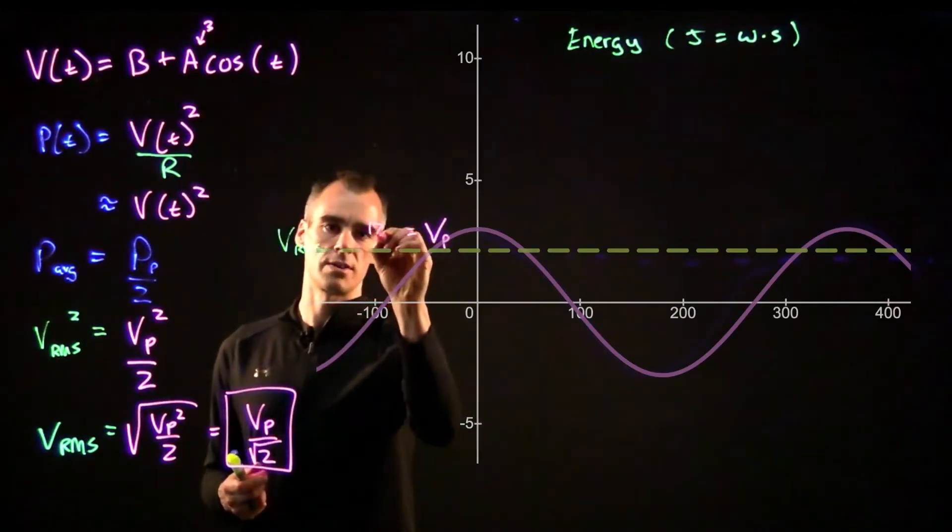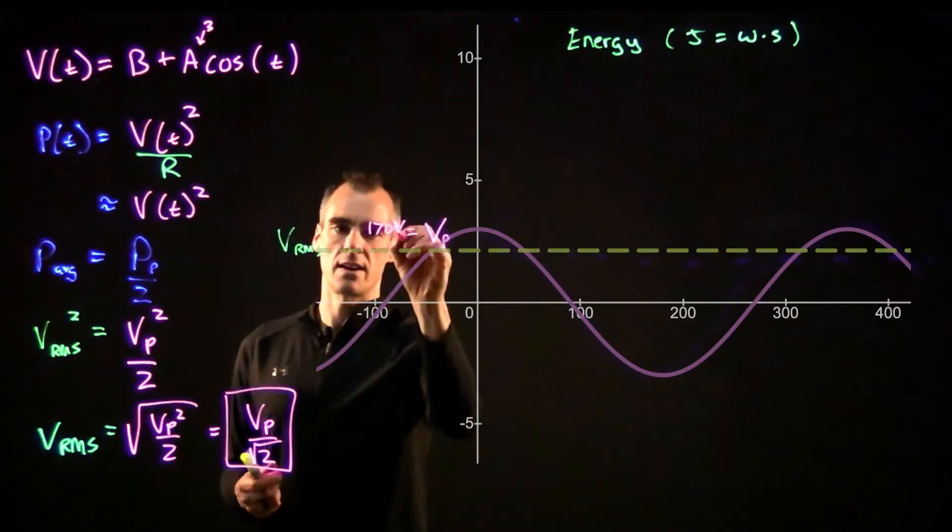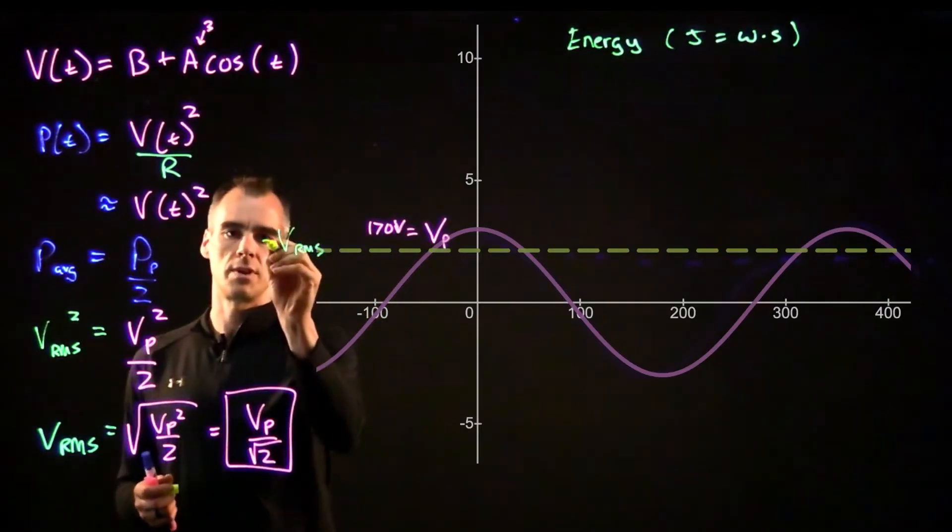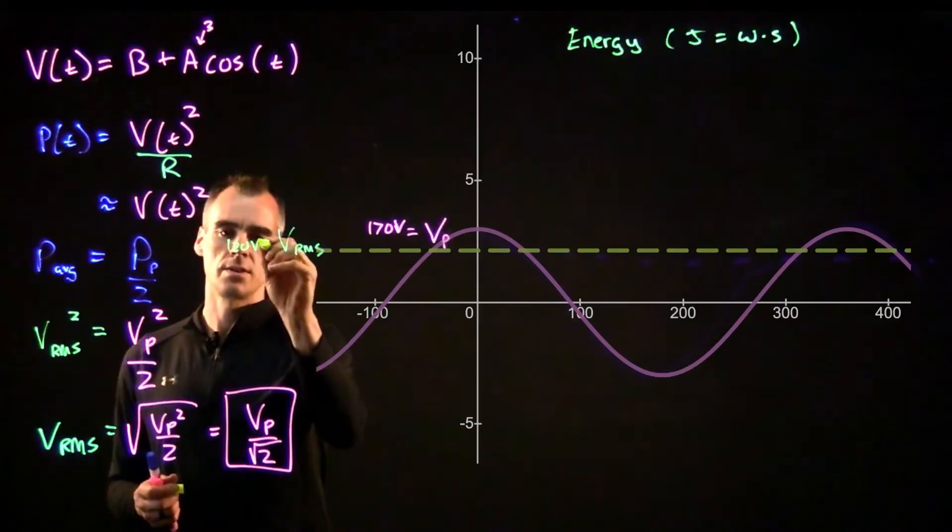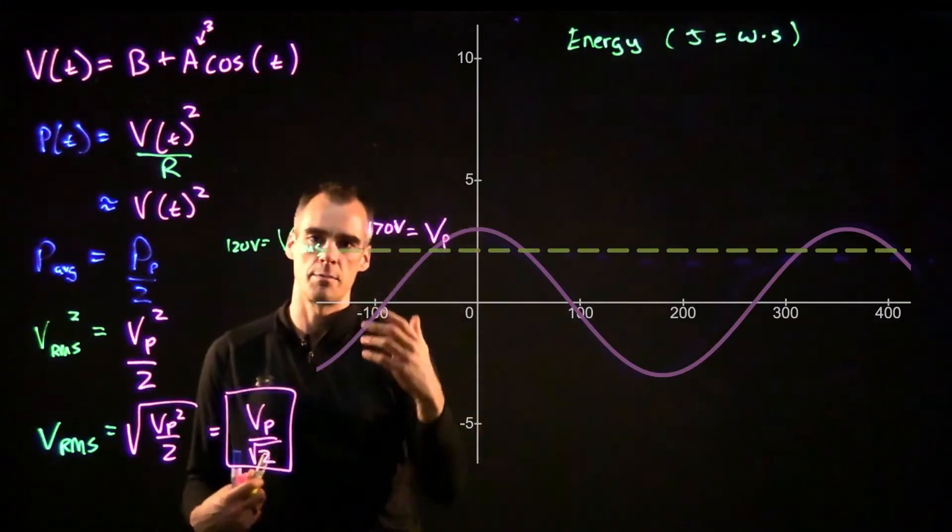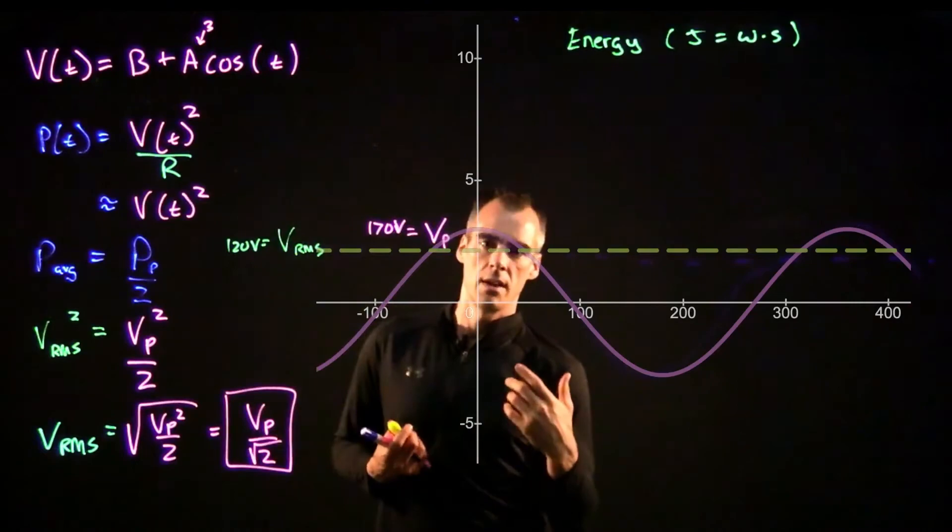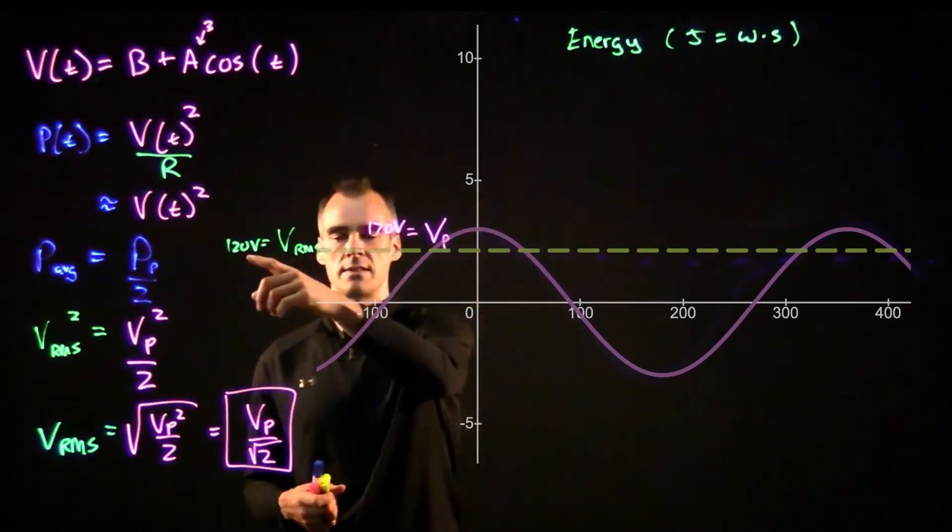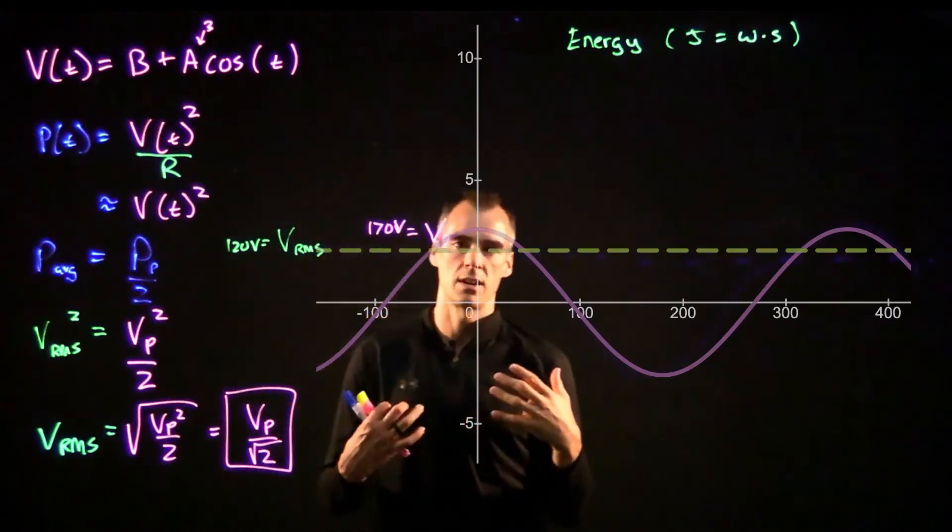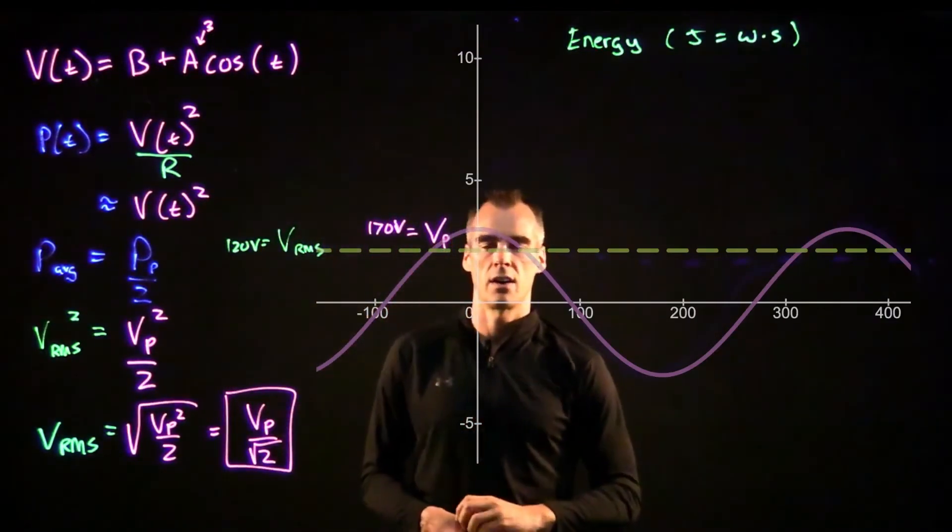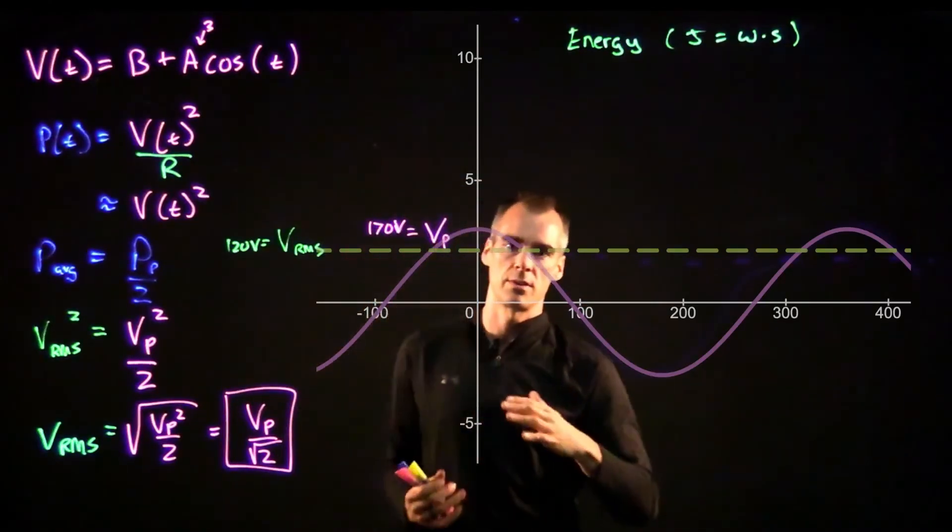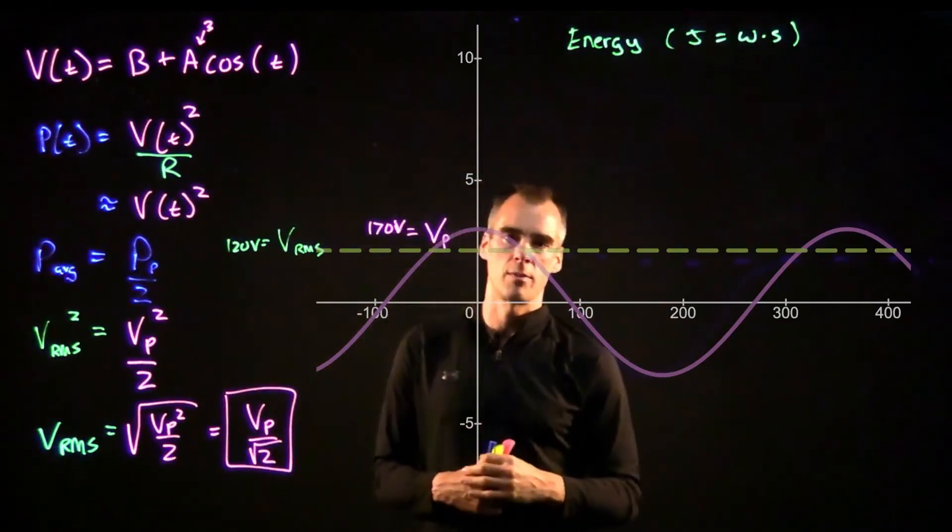Well that means that our V_RMS would be equal to this divided by square root 2, which would be 120 volts. So that is what is in your outlet. It's actually the peak to peak of the voltage coming out of your outlet is at 170, but our V_RMS is at 120 because that's sort of the, it gives the equivalent energy of what a constant 120 volts would give. So that's a little bit of the intuition where we get V_RMS from and why it's so important.